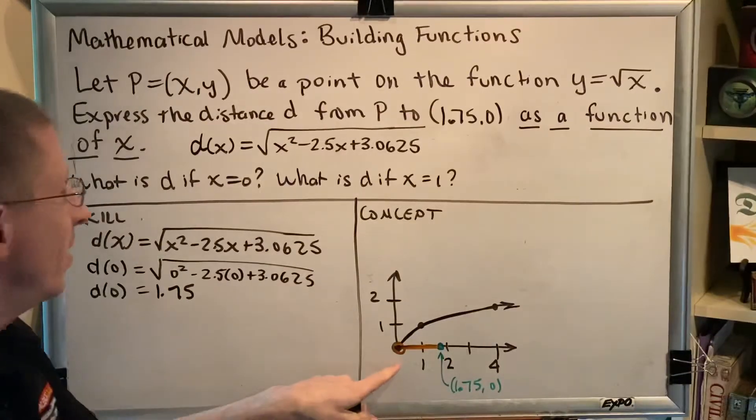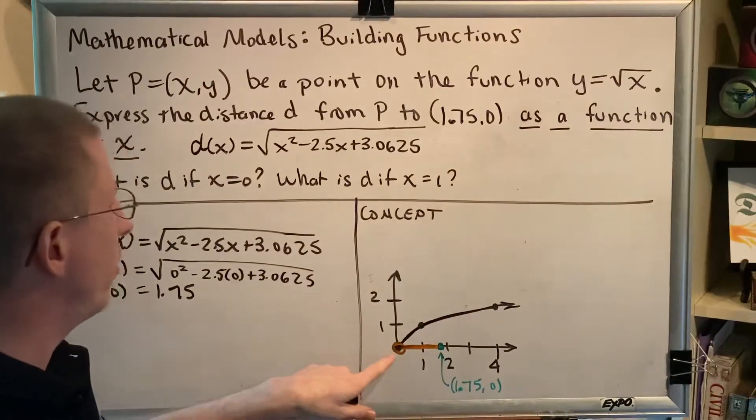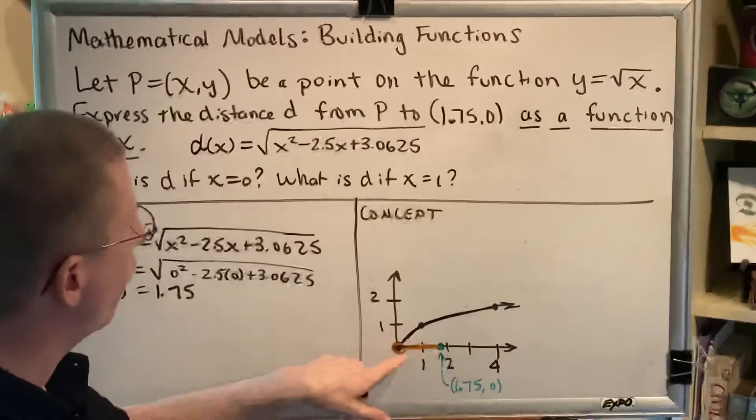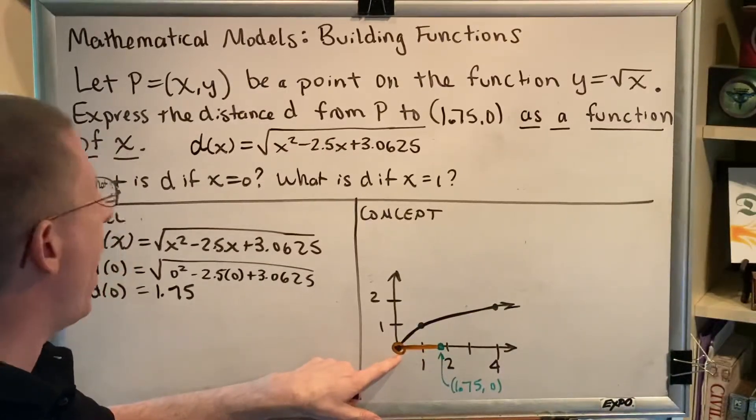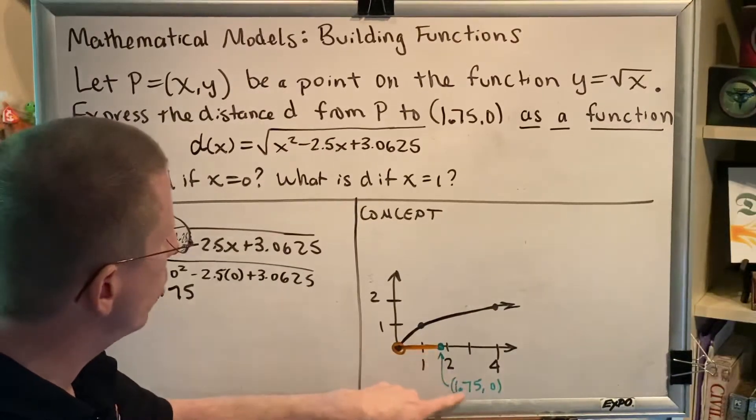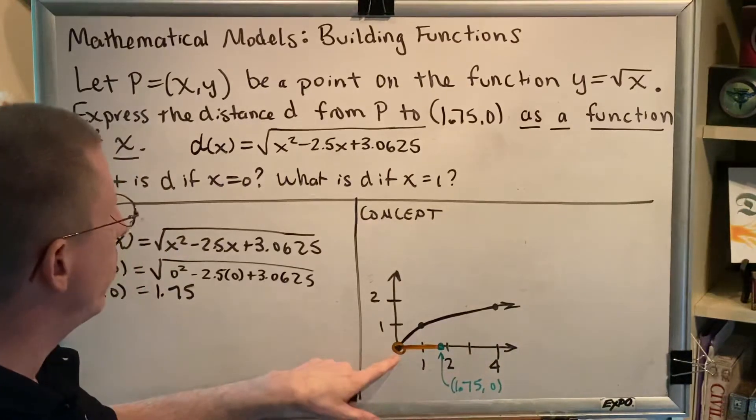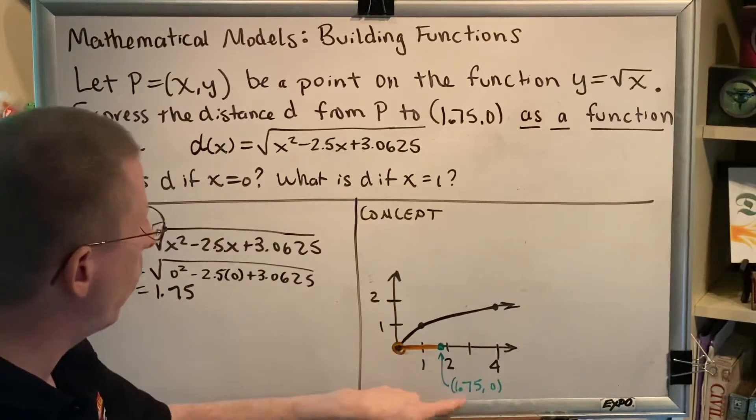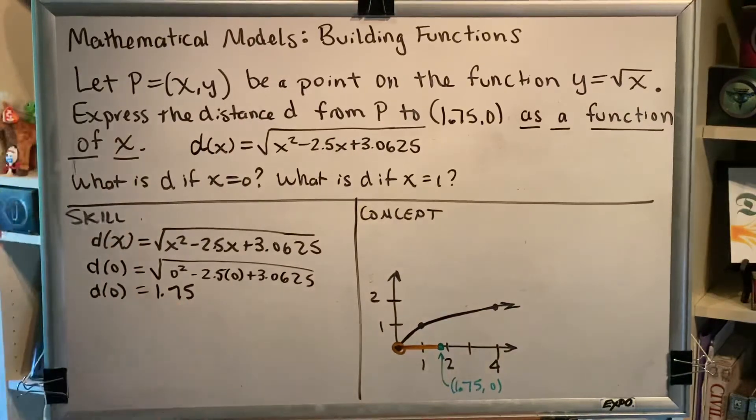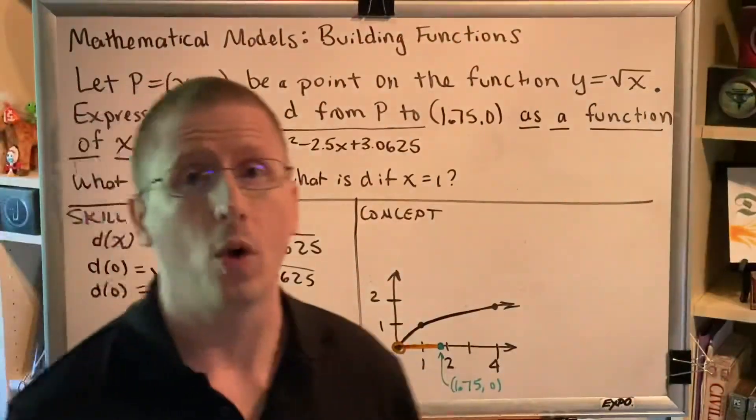how far is it from that point to the point (1.75, 0)? Well, this is very easy to measure. These are both points that are sitting right on top of the x-axis. If you want to know how far apart they are, just subtract. So the x-coordinate here is 1.75. The x-coordinate here is 0. Subtract: 1.75 minus 0 is 1.75. So we see that it works.